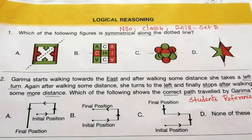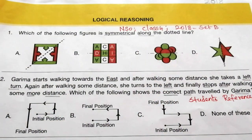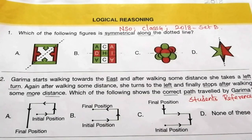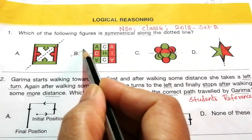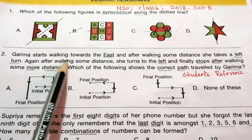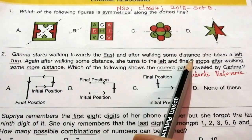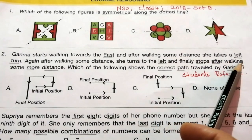The first topic is Logical Reasoning. Question 1: Which of the following figures is symmetrical along the dotted line? Look at the given four options carefully and try to find out the answer. The correct answer is B.